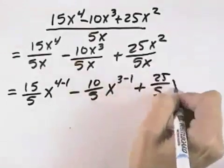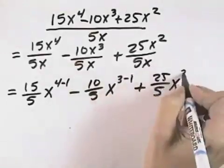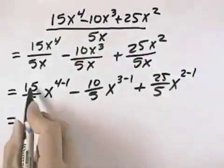And finally, plus 25 over 5, and the exponent of x would be the 2 from the numerator minus the 1 from the denominator.